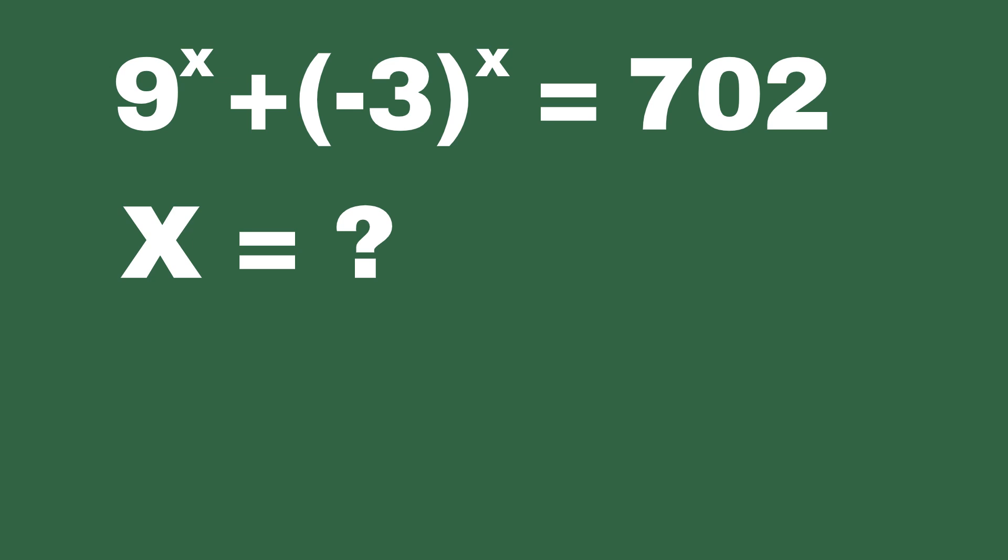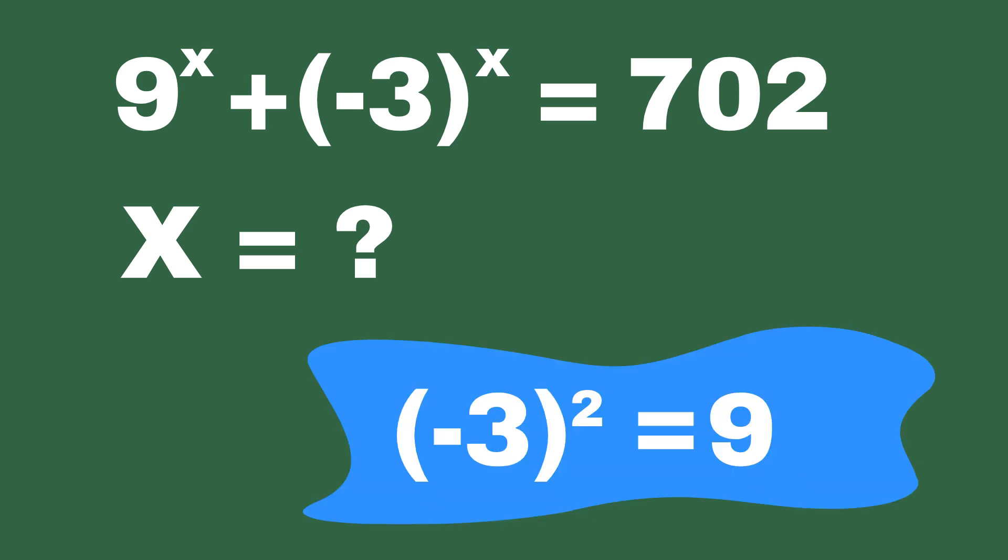Specifically, if you take minus 3 and raise it to the power of 2, you'll see that it equals 9. This connection is crucial because it allows us to rewrite the equation in a way that simplifies the problem and makes it easier to solve. Understanding this relationship is the first step toward cracking this problem. With this insight in hand, let's take the next step and update the equation accordingly.